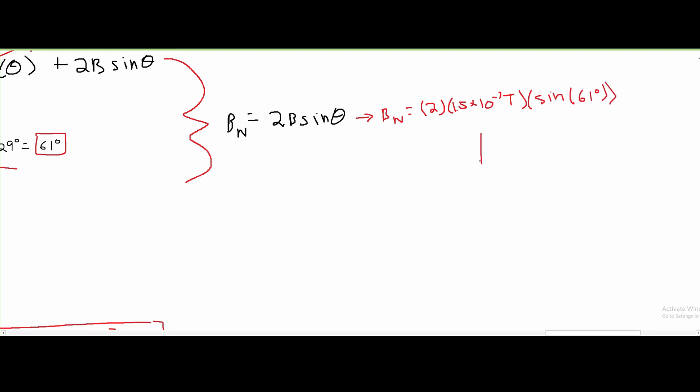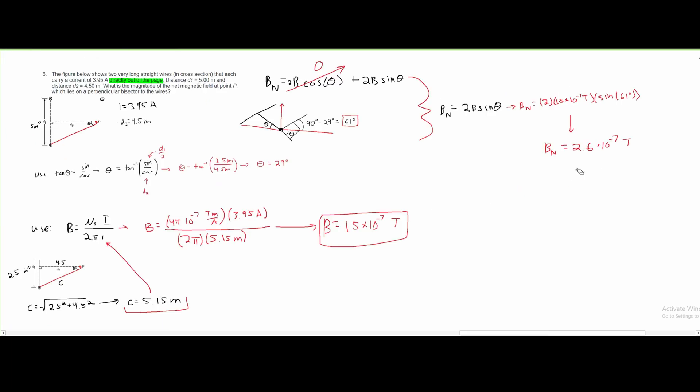This is going to give us the approximate answer that B_net equals 2.6×10⁻⁷ teslas. Our final answer right here is going to be the magnitude of the net magnetic field at point P. So this is our answer right here.